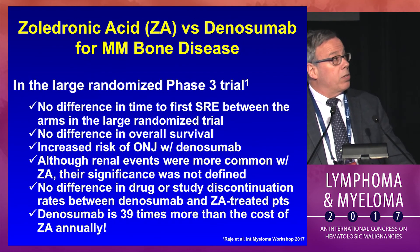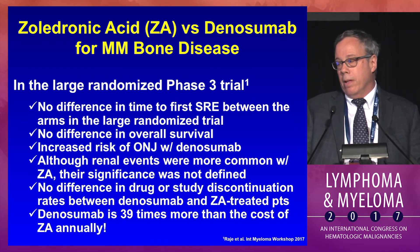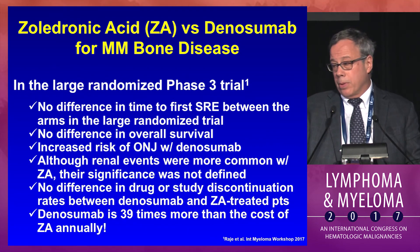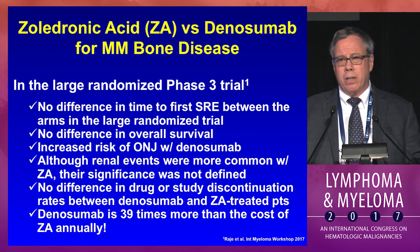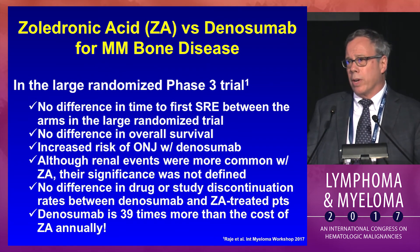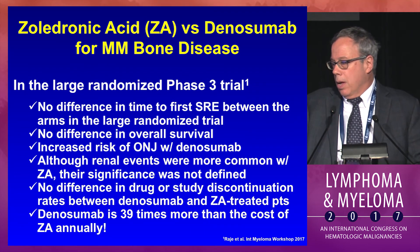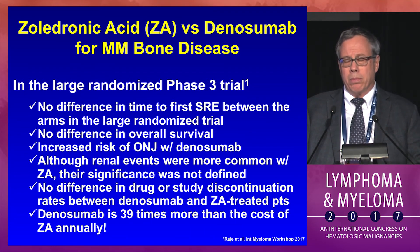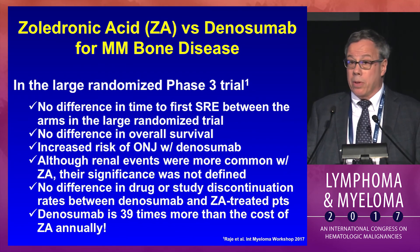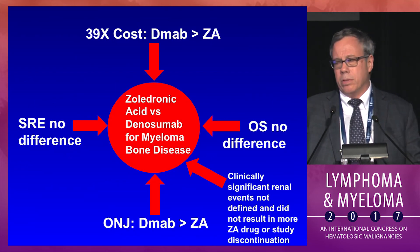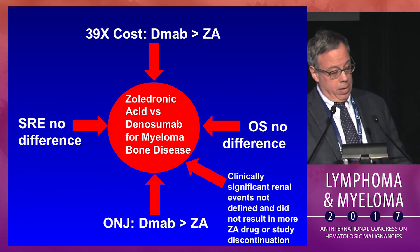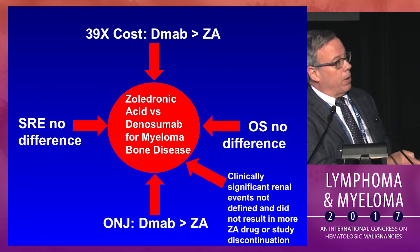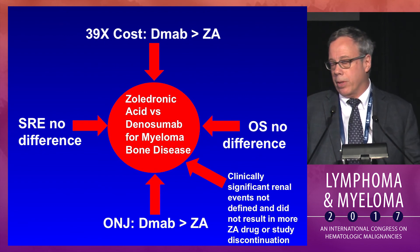In summary from the phase 3 data: there is no difference in time to first skeletal related event between the two arms, no difference in overall survival, a consistently higher incidence of ONJ with denosumab across trials (not always statistically significant), and a 7% differential in renal events whose clinical significance is unclear. There's no difference in drug or study discontinuation — if anything, a slight predominance in the denosumab arm. And the drug is substantially more costly. So: Z or D? — zoledronic acid remains the drug of choice.